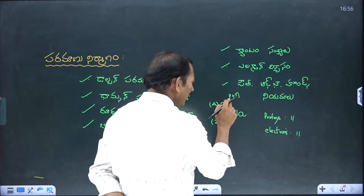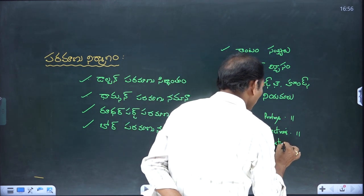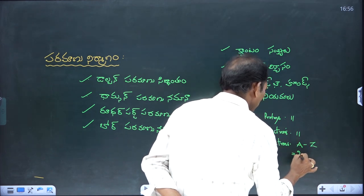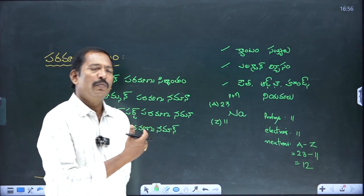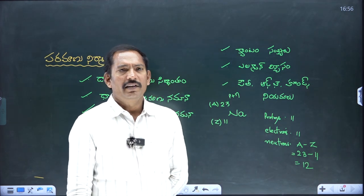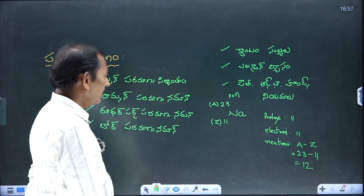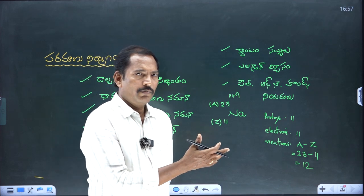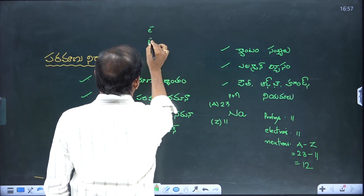When proton number is 10, that's 10. The remaining gives us the number of neutrons. Neutrons equals mass number minus atomic number: 23 minus 10 equals 13. That is very important. So sodium has 13 neutrons.